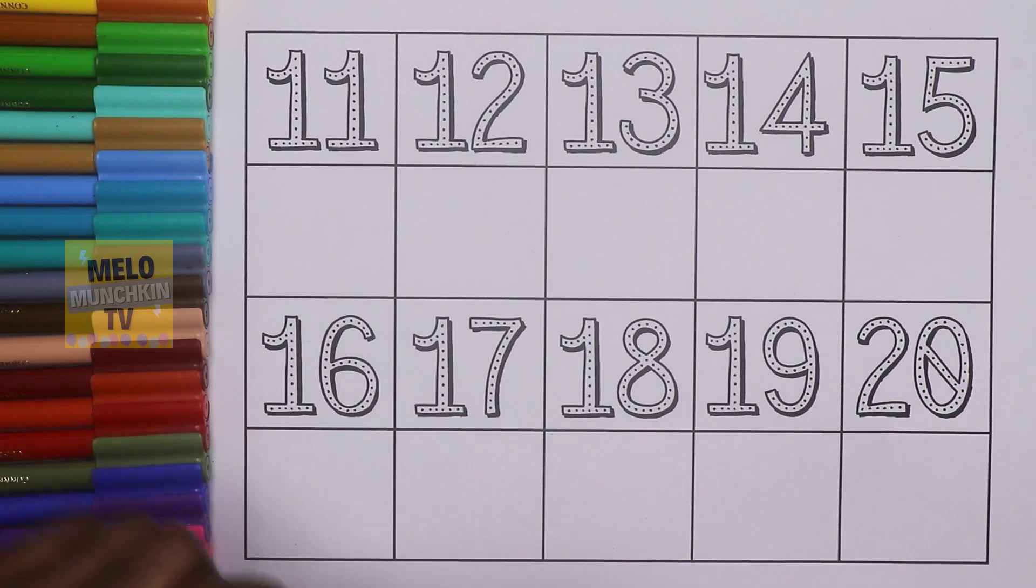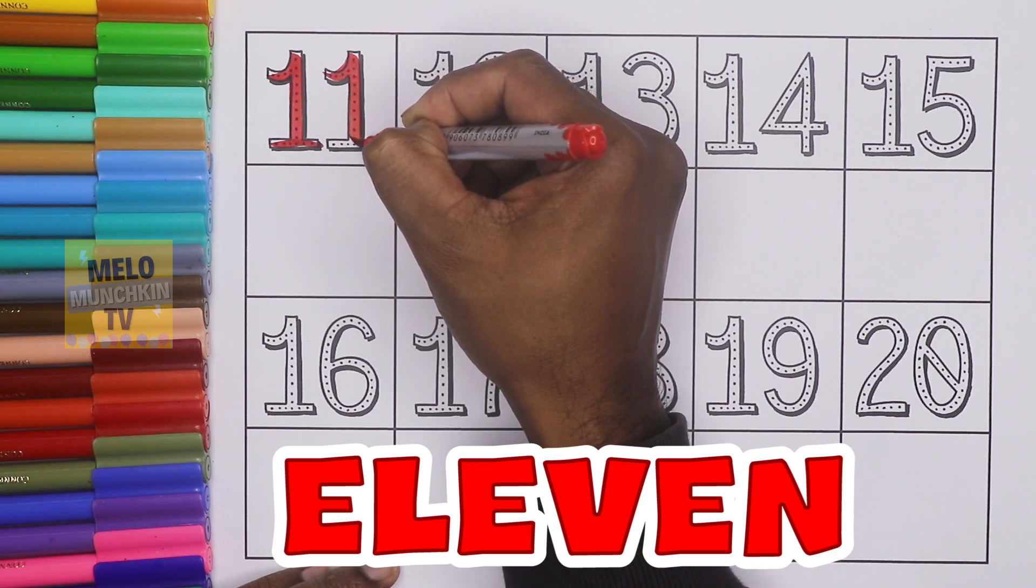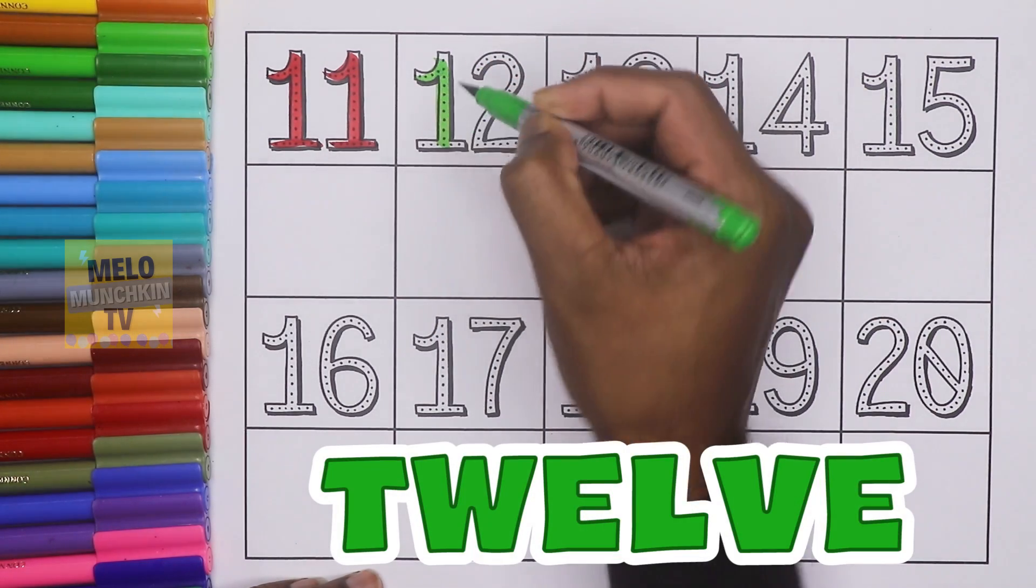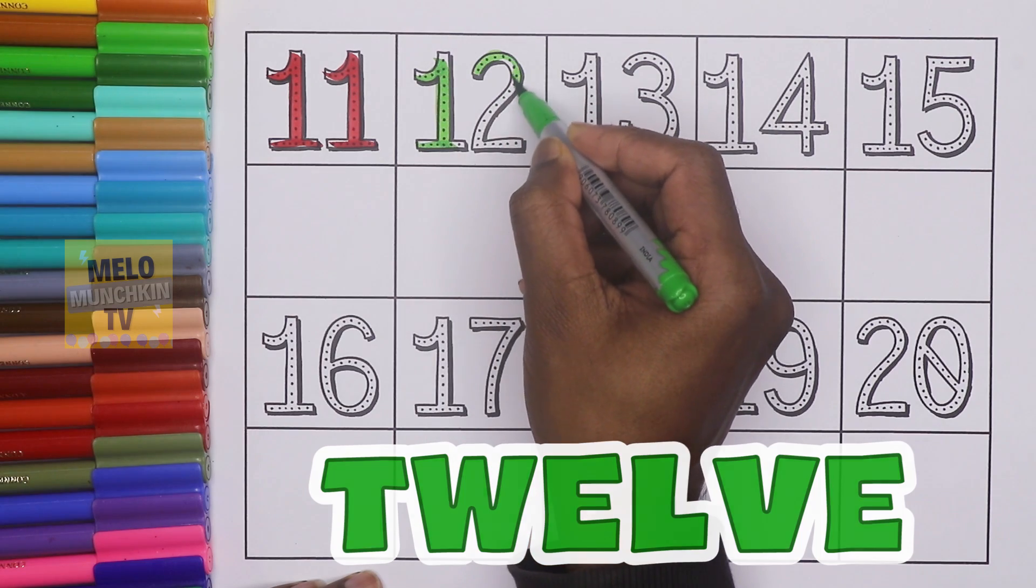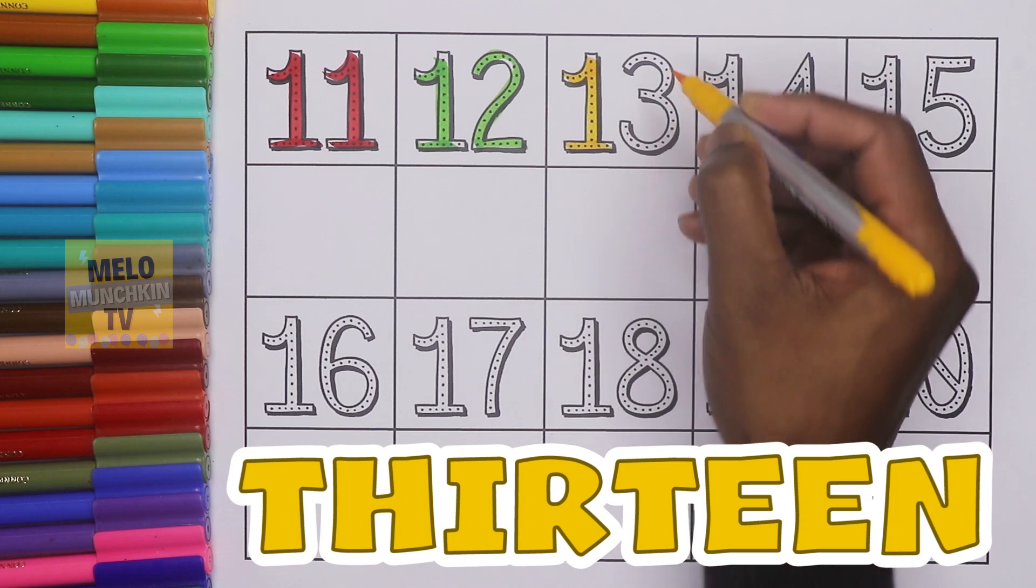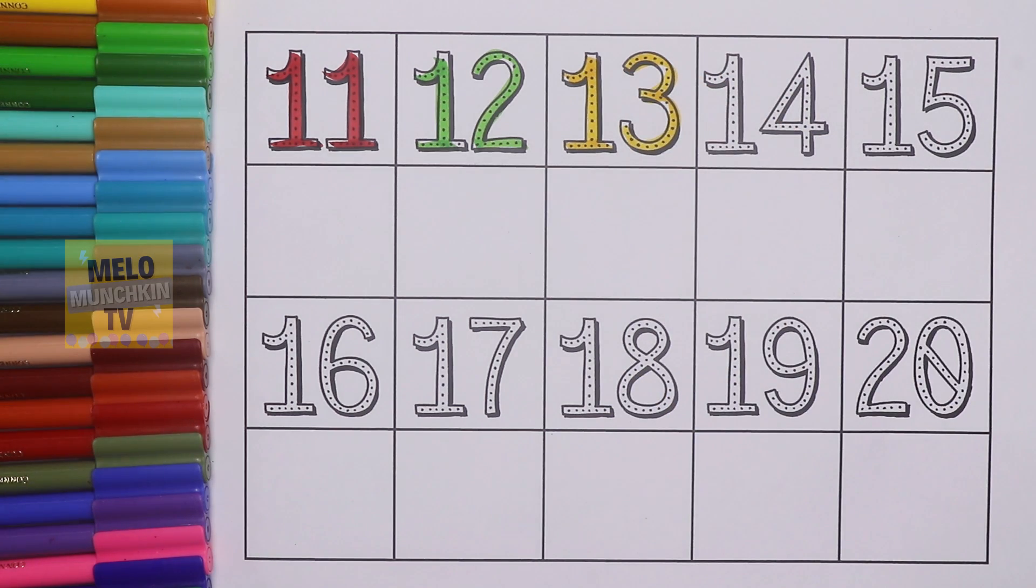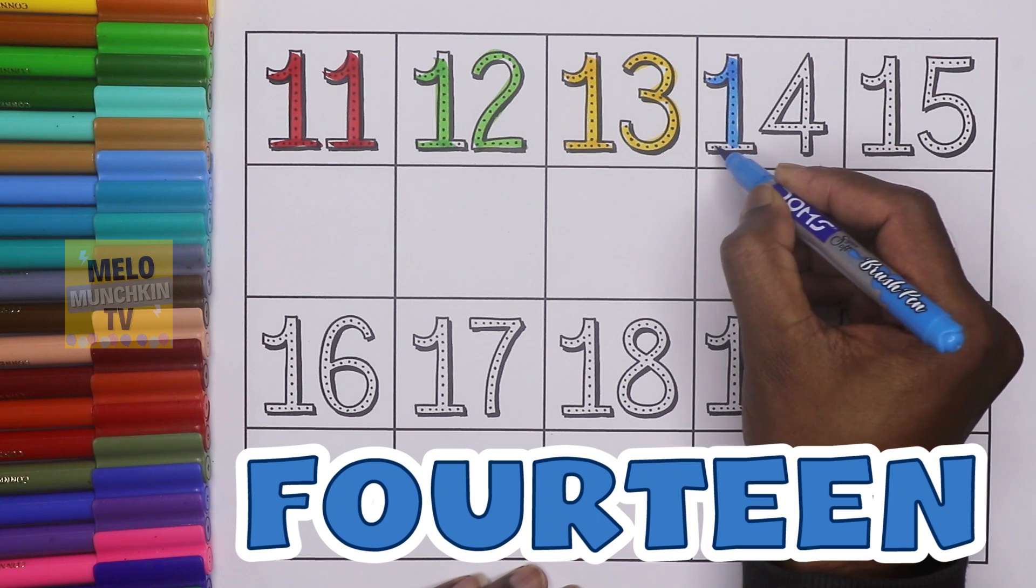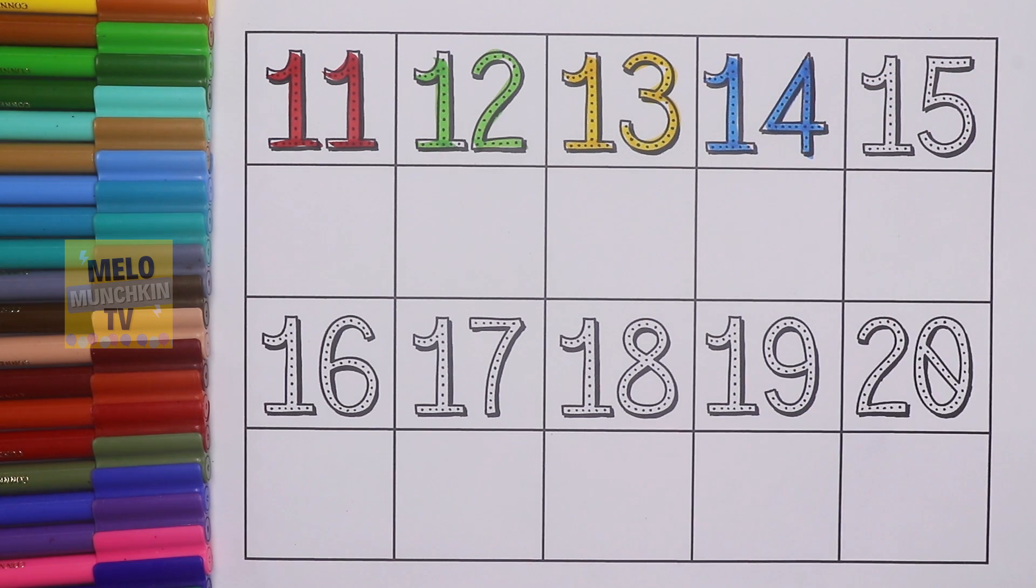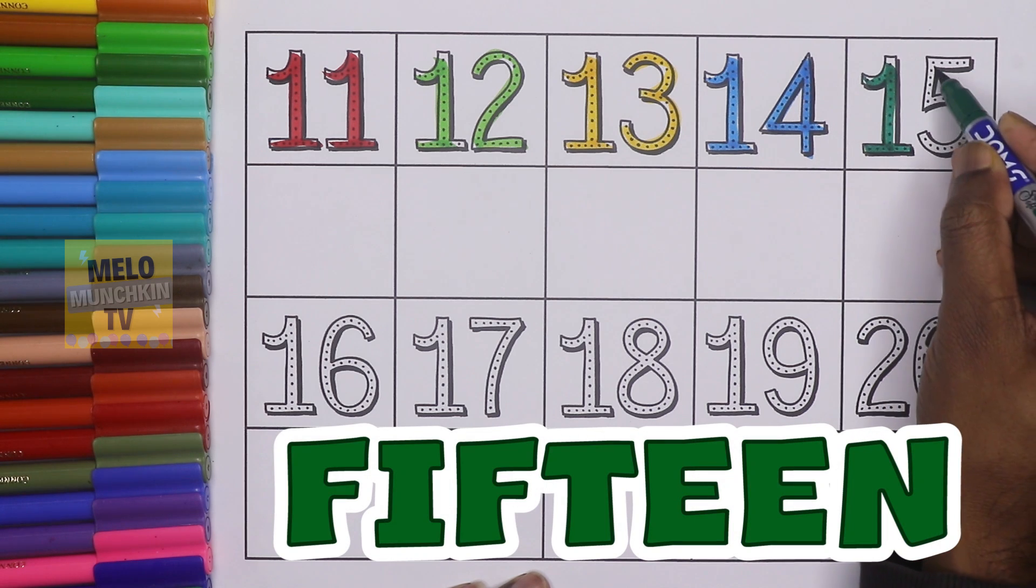This is 11, E-L-E-V-E-N, 11. This is 12, T-W-E-L-V-E, 12. This is 13, T-H-I-R-T-E-E-N, 13. Next, 14, F-O-U-R-T-E-E-N, 14. 15, F-I-F-T-E-E-N, 15.